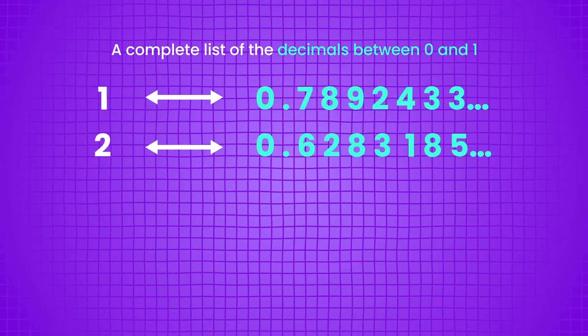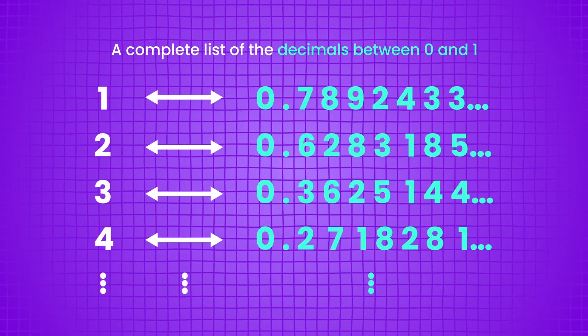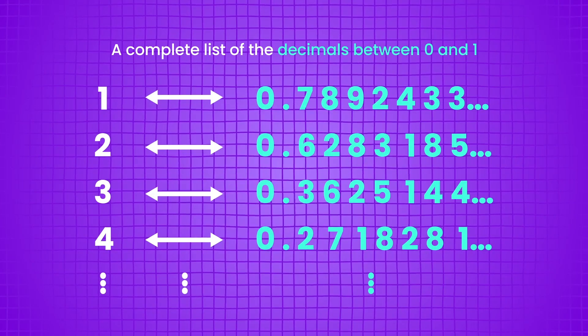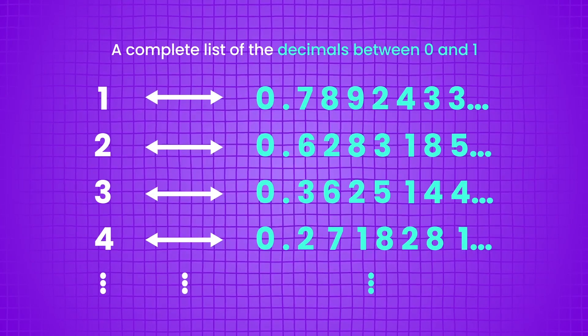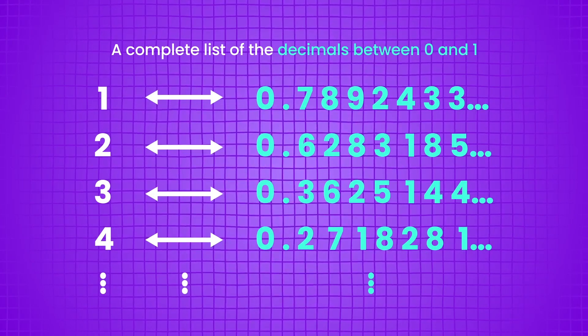And in 1873, he had his answer: decimals. Imagine, for the sake of argument, that you could pair the naturals with every single decimal between 0 and 1, so that you have an infinite but complete list of all the decimals from 0 to 1, exactly how it doesn't really matter.